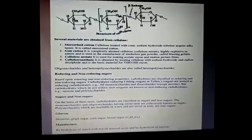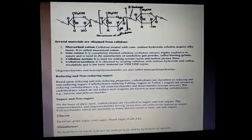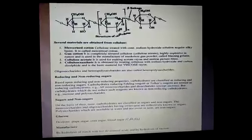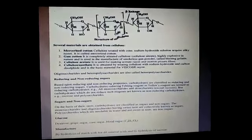The different materials obtained from cellulose include: mercerized cotton — cellulose treated with concentrated sodium hydroxide solution to acquire a silky lustre; gun cotton — completely nitrated cellulose, highly explosive and used in the manufacture of smokeless gunpowder called blasting gelatin; cellulose acetate — used for making acetate rayon and motion picture films; and viscose rayon — obtained by treating cellulose with sodium hydroxide and carbon disulfide.